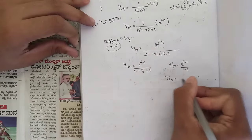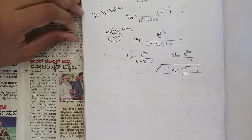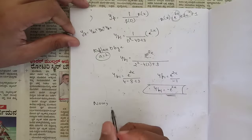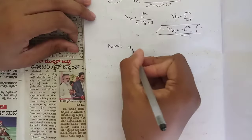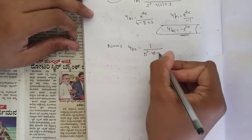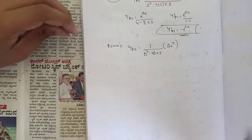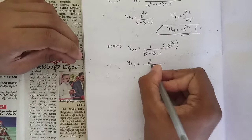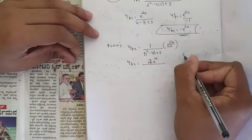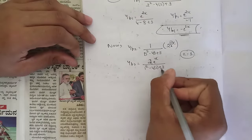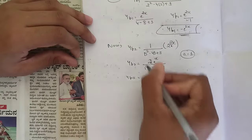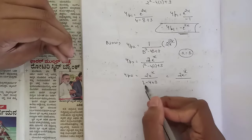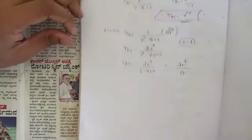For yp2, r(x) = 2e^x, so a = 1. yp2 = 2e^x / (1² - 4·1 + 3) = 2e^x / (1 - 4 + 3) = 2e^x / 0. We get zero in the denominator, so we must use the derivative rule.